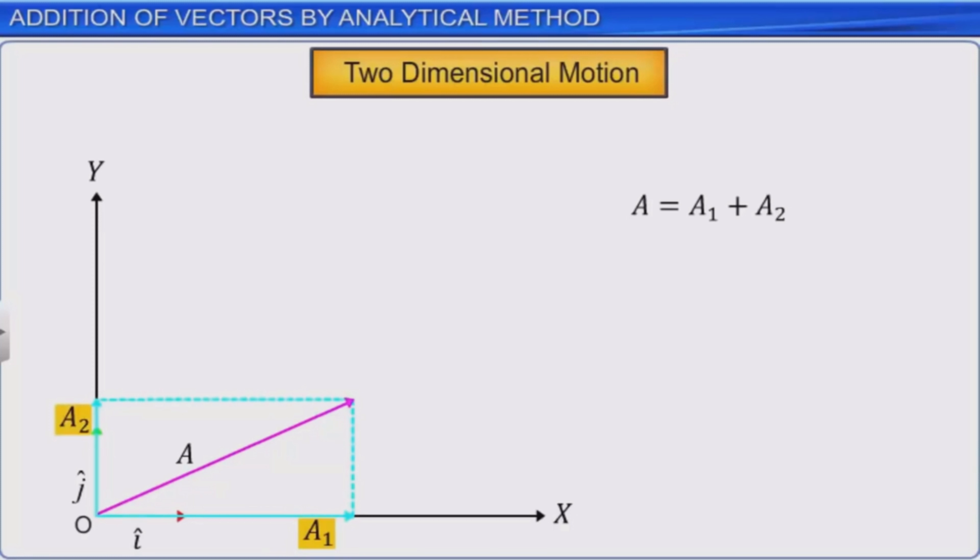Let this be equation one. As A1 is parallel to i, you can write A1 is equal to Ax i. Let this be equation two. Similarly, A2 is equal to Ay j. Let this be equation three. Substituting two and three in one, you get A is equal to Ax i plus Ay j.